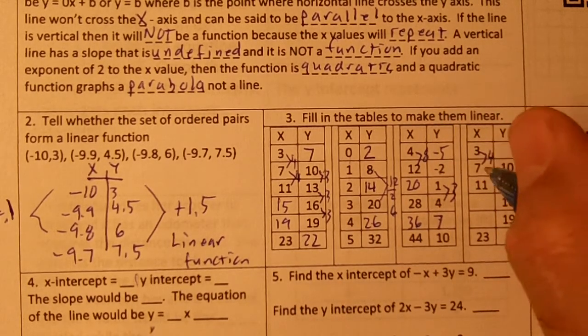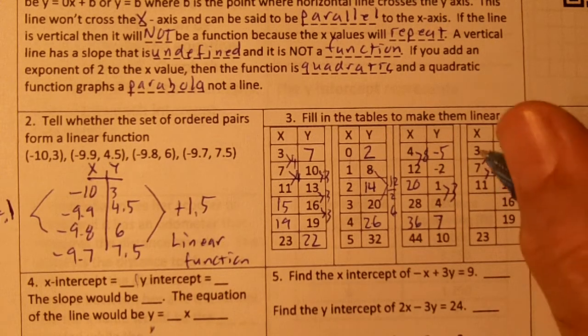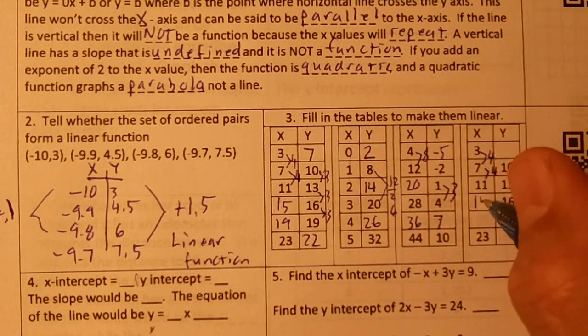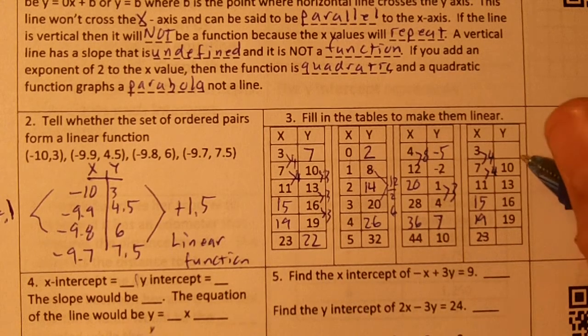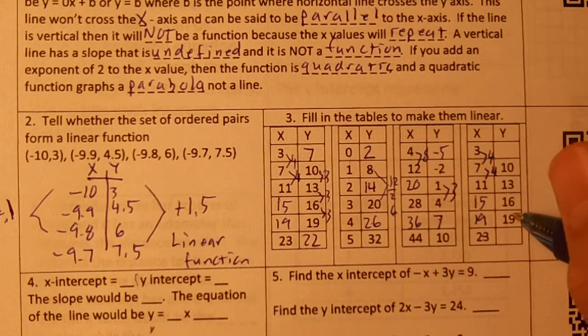Right here, our x values are increasing by 4. So I'm just going to keep adding 4, 15, 19, and it would work out to 23. And lastly, 10, 13, 16, 19. This would be 22 and this would be 7.